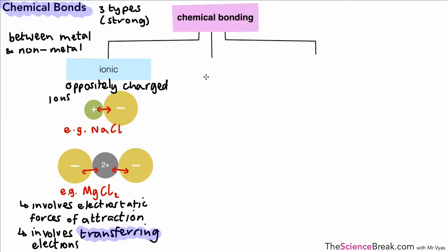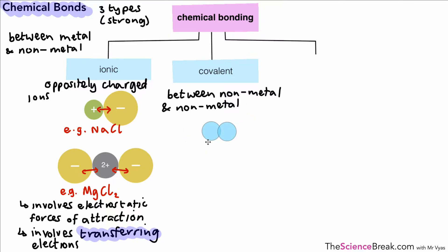The next type of bond is called the covalent bond. This bond happens between non-metal and non-metal atoms. One example of a substance that has a covalent bond is oxygen. We have two atoms of oxygen joined by a covalent bond. We often write oxygen in its symbol form as O2.